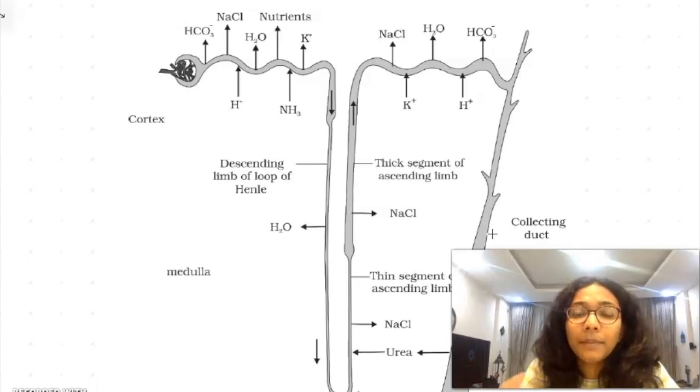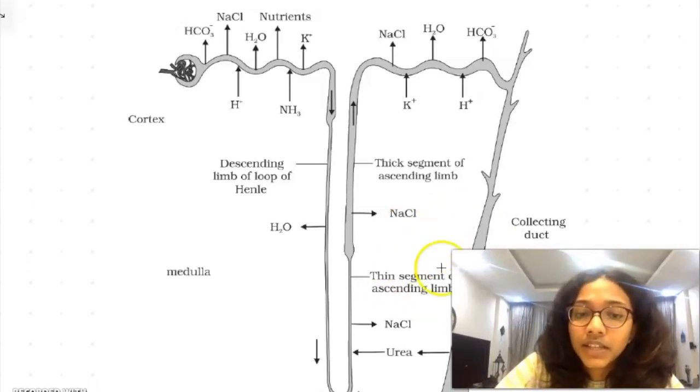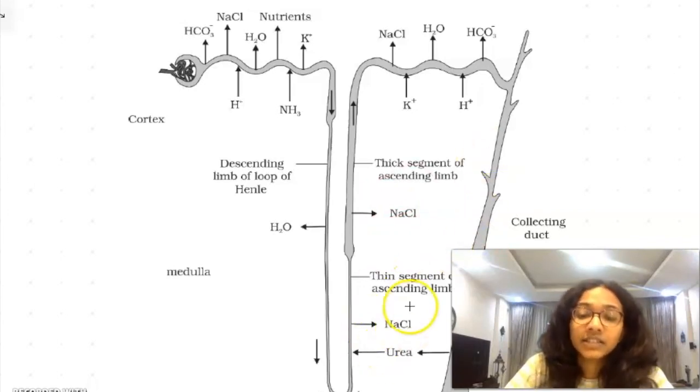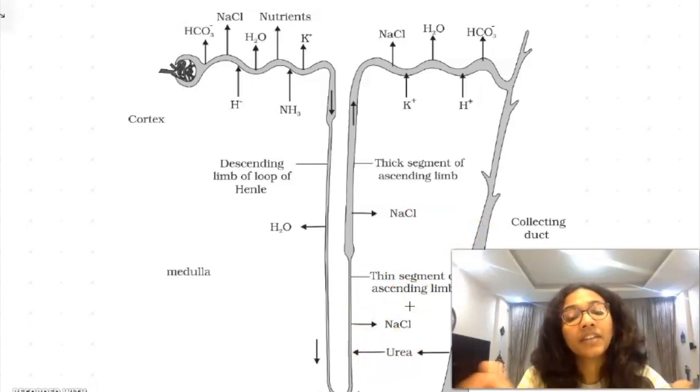DCT selectively secretes potassium and hydrogen ions. Collecting duct secretes a bit of urea back to the medullary interstitium - that's the area in between the cells, in between the nephrons. This urea is secreted back by the collecting duct into the interstitium so that it maintains the osmolarity again. This entire counter-current process - both of these - I'll be covering in the next video.